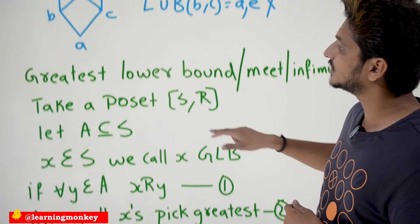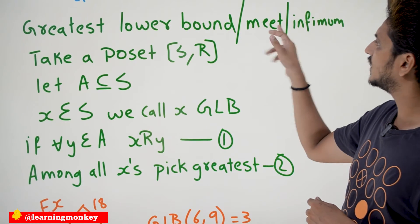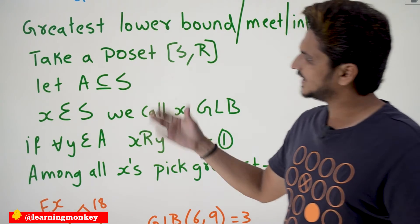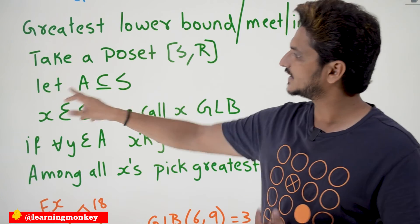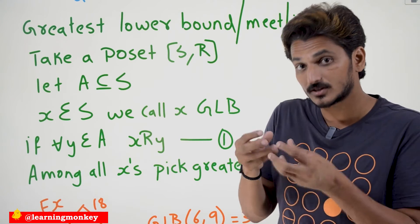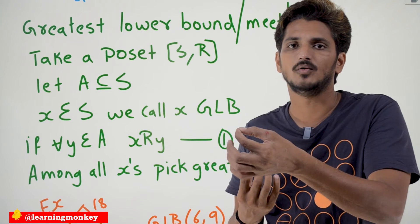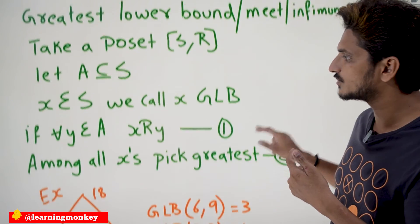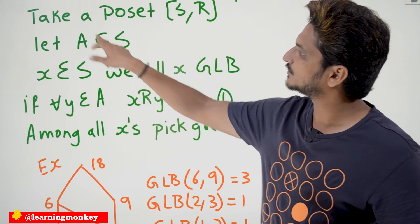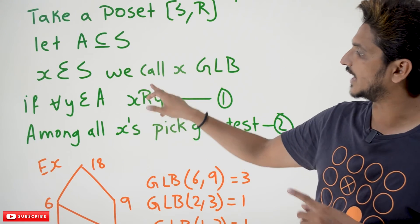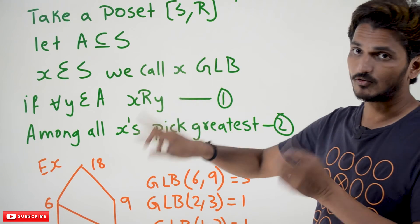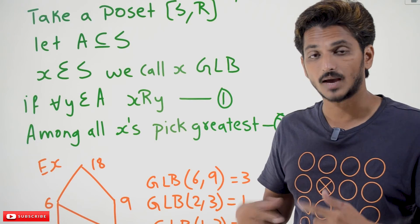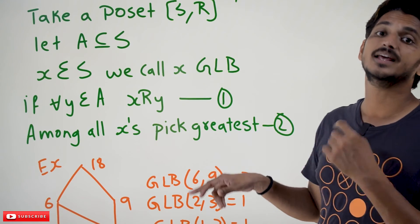Now we are going to understand Greatest Lower Bound — also called Meet or Infimum. Take a poset S, R and let A be a subset of S. For those elements we need to identify the Greatest Lower Bound. X belongs to S; we call X the Greatest Lower Bound when for all Y belonging to A, X relates Y. Note that in Least Upper Bound it was Y relates X; this is exactly opposite. You have many lower bounds; among those you pick the greatest one — that is the Greatest Lower Bound.